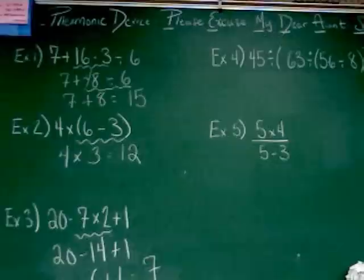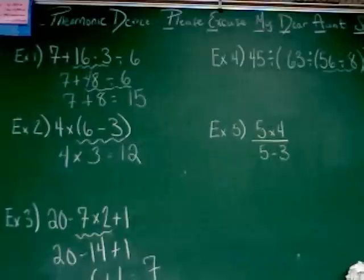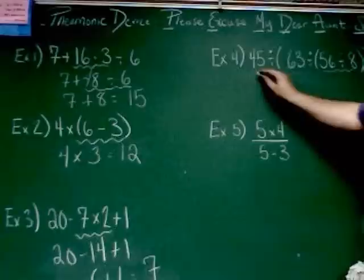Again, the innermost set of parentheses is what we do first. So this problem, the innermost set would be this one, because they're inside this set out here. So the first thing I have to do in this problem, even though they're all division, is 56 divided by 8. 56 divided by 8 is 7. Good.